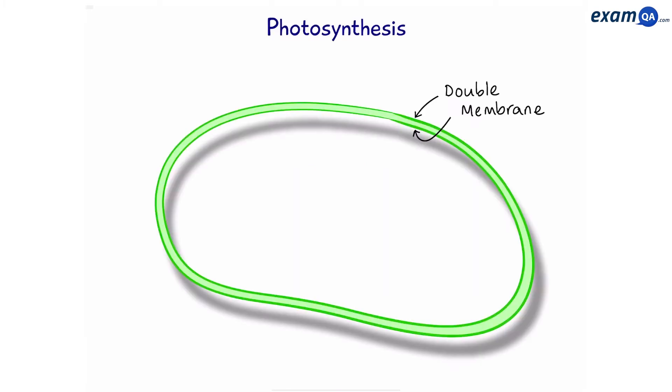Photosynthesis. Before we get into photosynthesis, let's start with the structure of the chloroplast. Now, the chloroplast has a double membrane.